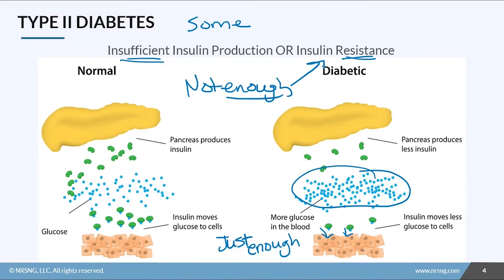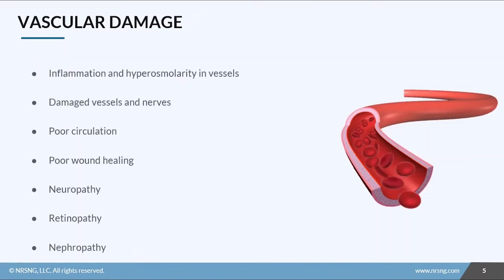Either way, the blood sugars become dangerously elevated. There are a few complications of having those really elevated blood sugars that we're going to look at throughout this module. One of the biggest is the amount of damage it causes in the vascular system — we always say diabetes is a vascular disorder. Elevated blood sugars are going to cause inflammation and hyperosmolarity within the vessels, that super concentrated state because of all the blood sugar, and both of those things are going to do damage to the vessels themselves as well as to the nerves around them.